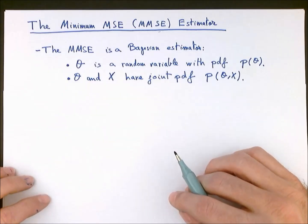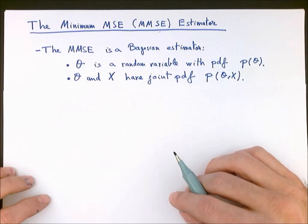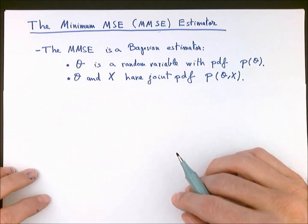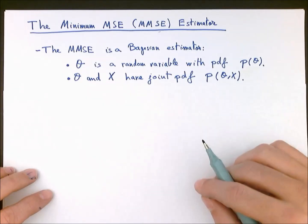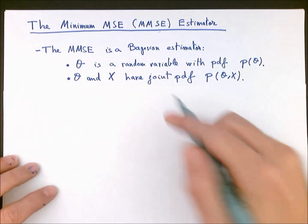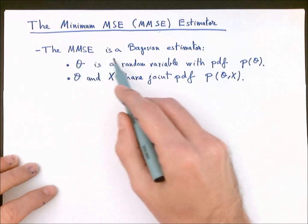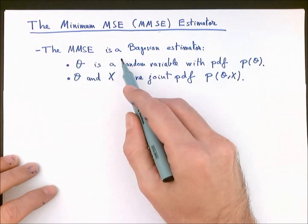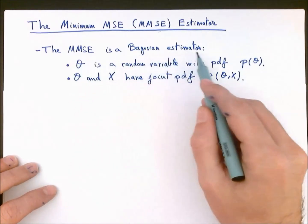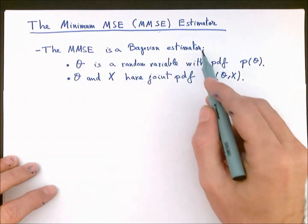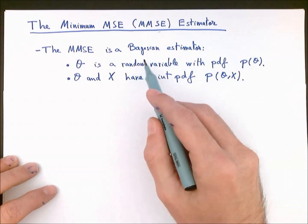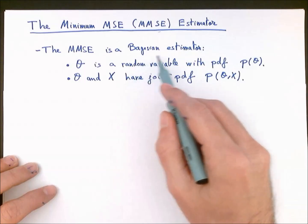Now that we have defined the concepts of estimator, bias, and mean squared error, we are ready to present the minimum mean squared error estimator. Before we actually define it, we should notice that the minimum mean squared error estimator is a Bayesian estimator. This means that it belongs to a branch of estimation theory which is usually called Bayesian estimation.